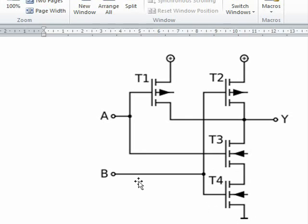Likewise, for B and T2 and T4. So if B is low, then T2 is going to be conductive and T4 is going to be non-conductive, so Y will be connected to positive.